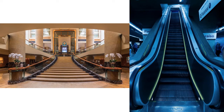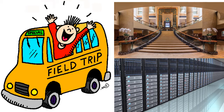Now recall an instance where there is a staircase and an escalator to go to the top floor of a multi-storey building. The path of the escalator is linear and shorter than the path of the staircase. An escalator goes up and down in a straight path. The change of position with time of living or non-living objects is known as motion.